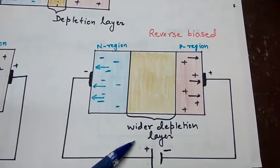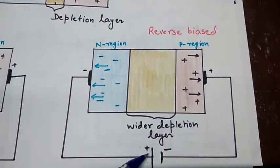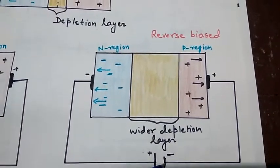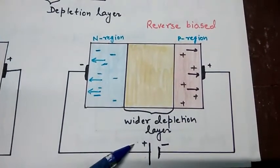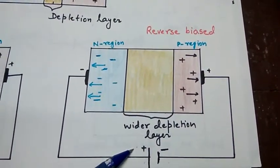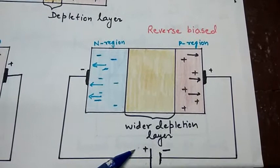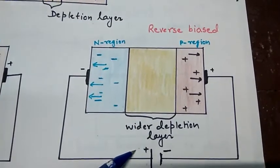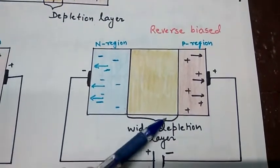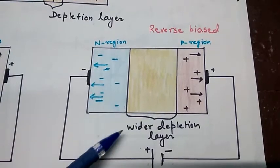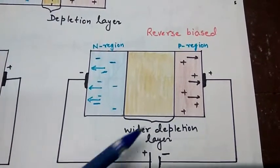In reverse biased, voltage is applied in the reverse direction as you can see here. Electrons are attracted towards the positive terminal and holes towards the negative terminal. This causes a wider depletion layer which stops the flow of current.